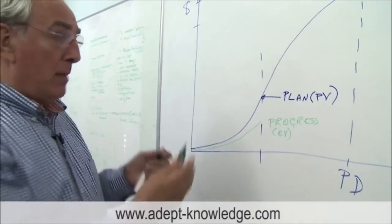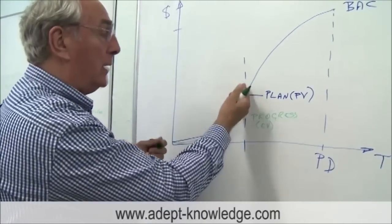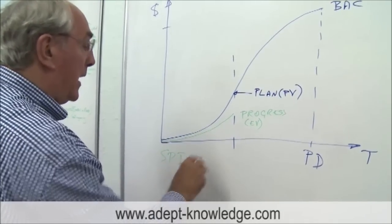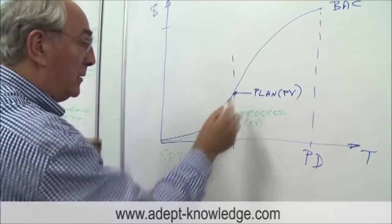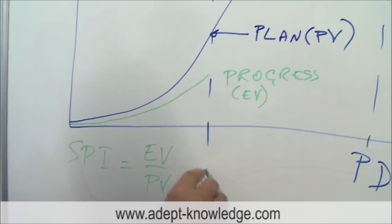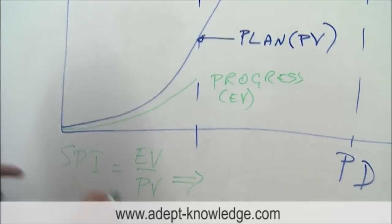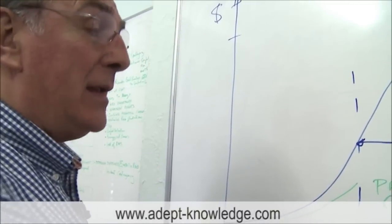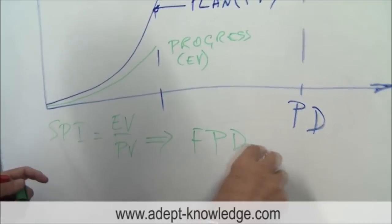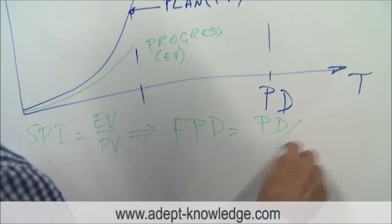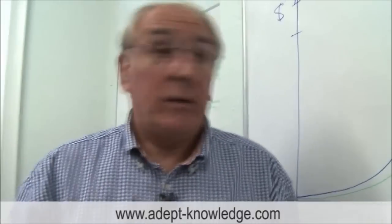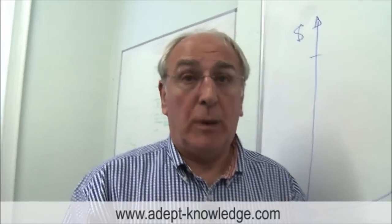For example we could by measuring an index of how well we're doing against how well we thought we were going to do, that's called a schedule performance index and that simply is a measure of the progress divided by the plan or we could say EV divided by PV. And then using that index if we simply take the project duration and that index of performance, what we can do is make a forecast of the project duration and that is simply the project duration divided by this schedule performance index. I think that's a pretty important index because this is really your effectiveness. How well are you doing in relation to what you plan to do?